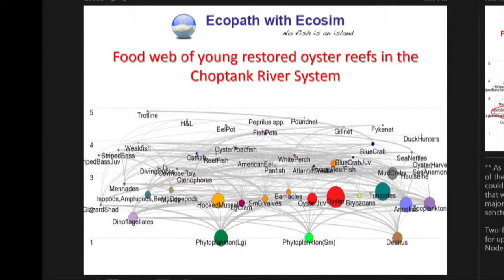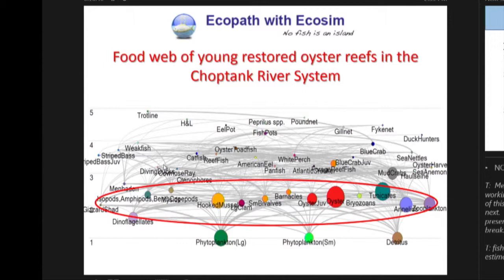It's a food web model. At the bottom you see the phytoplankton, the primary producers. At the very top you have the top level of the food web, which is the fishers — the trotline, the eel potters, the gill netters, etc. Right in the lower part, just after the primary producers, are those bivalves — the oysters and hooked mussels. In the EcoPath model, we manipulate those to understand what changes in harvest occur if you reach restoration goals, or if you harvest all the oysters back down to pre-restoration levels.